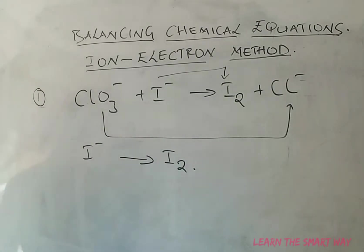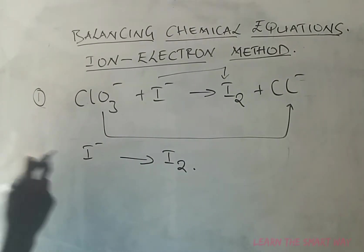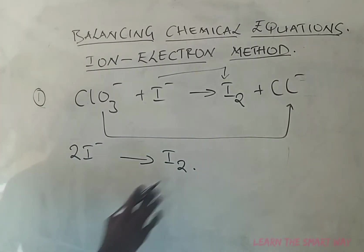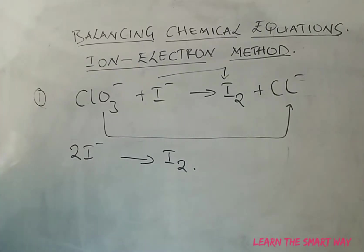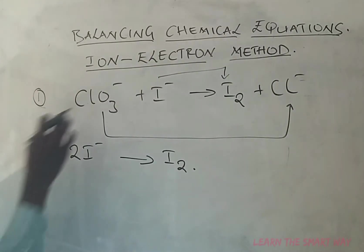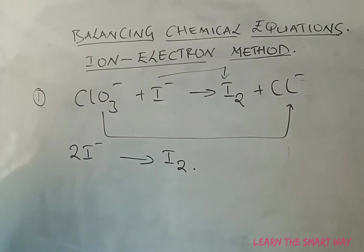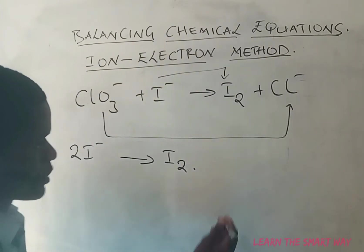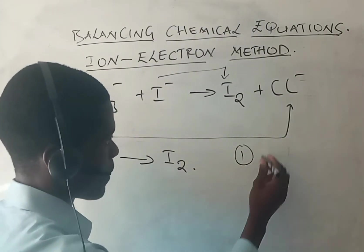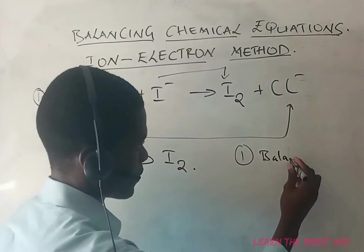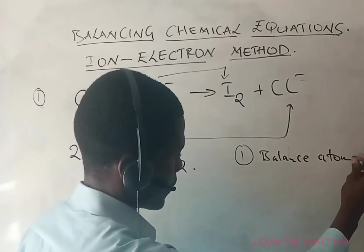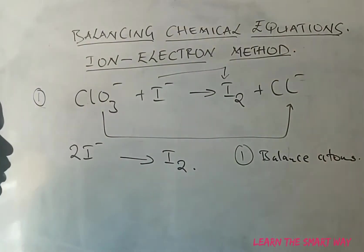We need to balance this half-reaction. On the right we have I₂ with a subscript of two, and on the left we have one, so we add a coefficient of two on the left. That is how you balance atoms. The first step when balancing using the ion-electron method is to balance atoms.